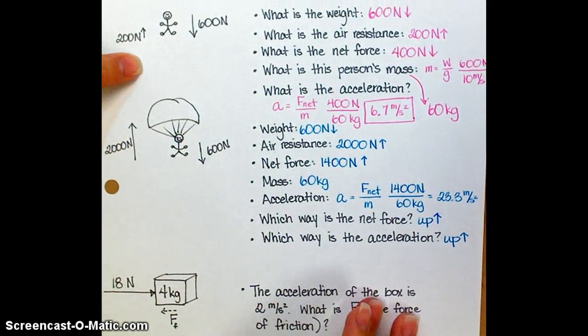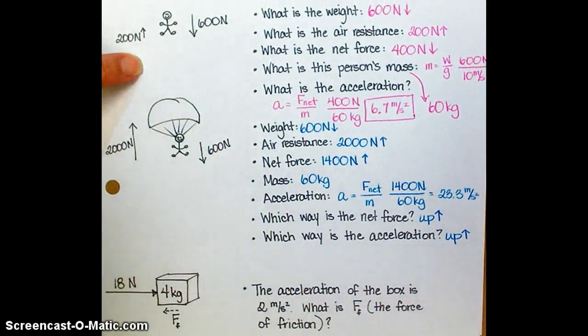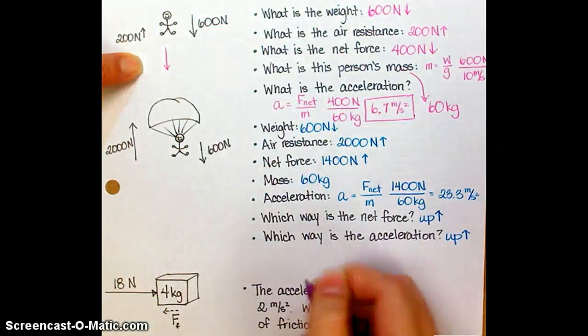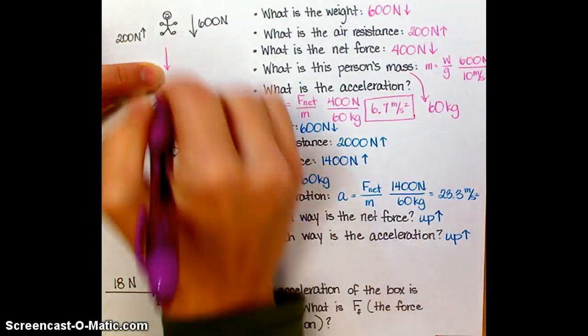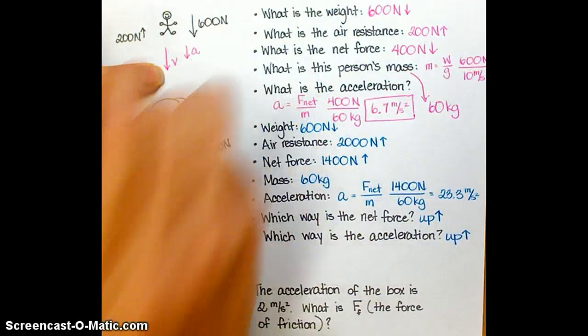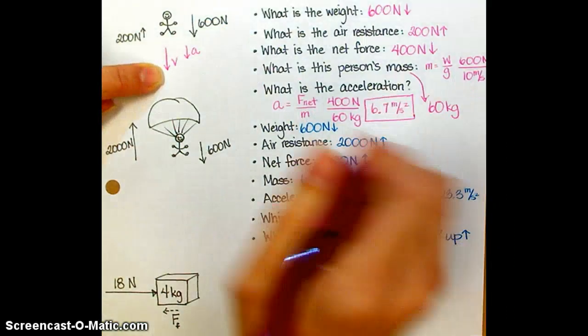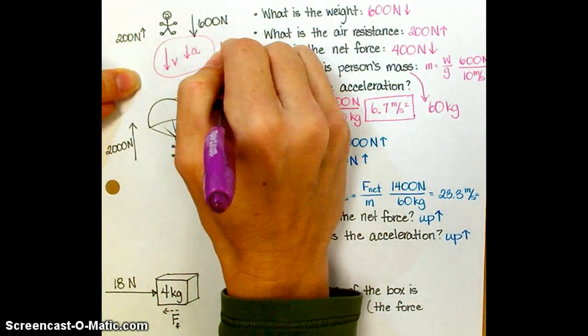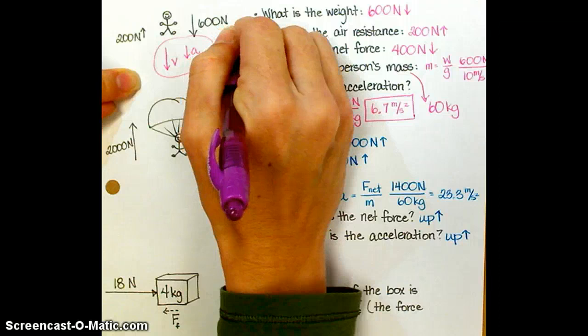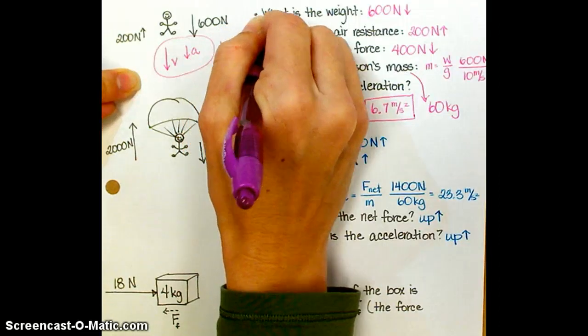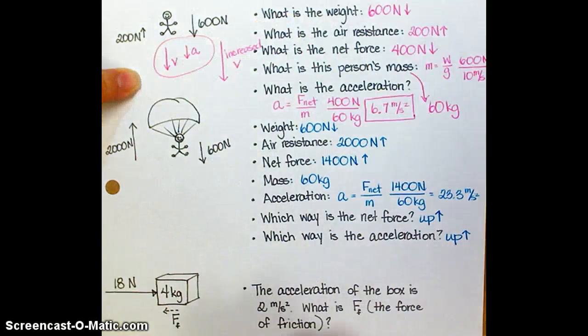Here, before he pulls his parachute, his velocity vector is down. His acceleration is also oriented down. And so these two have an additive effect, and it's going to wind up increasing velocity. So he's going to fall faster and faster and faster as time goes by.